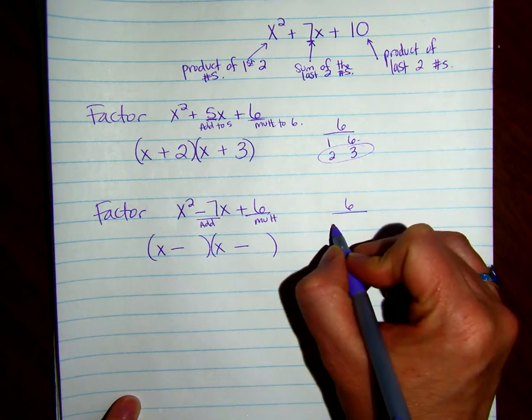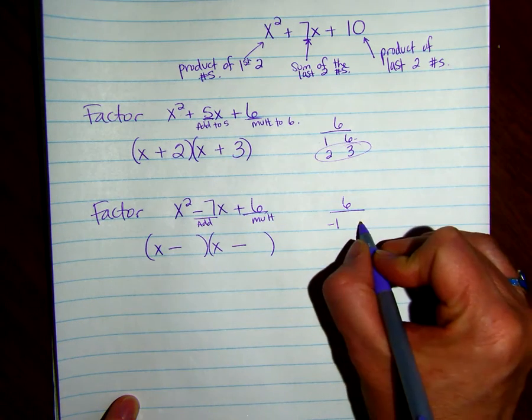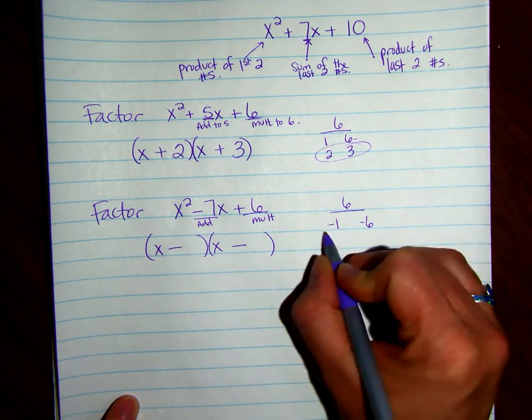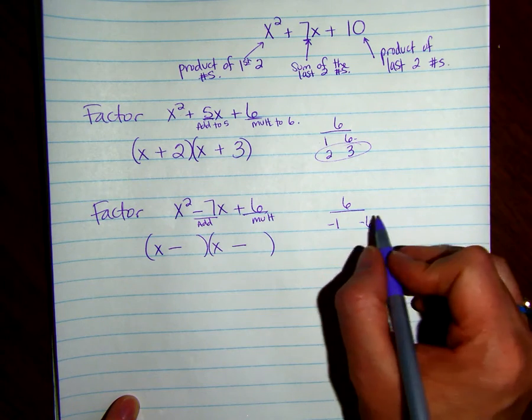So I need to have, to get to 6, we could do negative 1 times negative 6. Those two add to negative 7. So we're done.